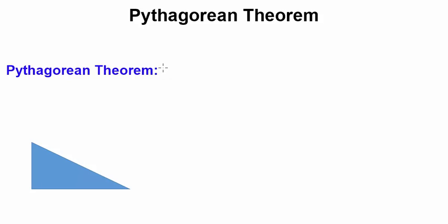It says if a triangle is a right triangle, right meaning it has a 90 degree angle, has one 90 degree angle...